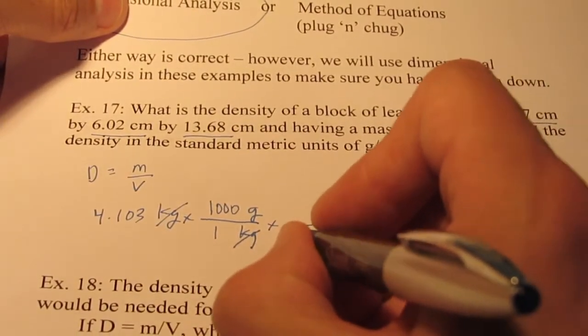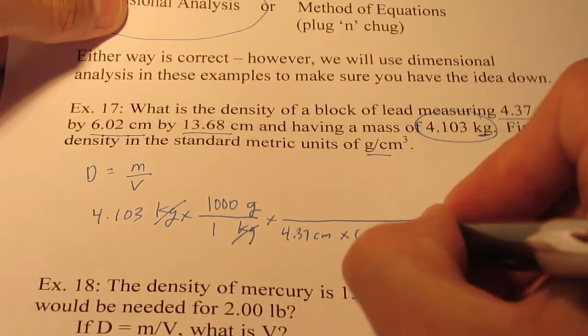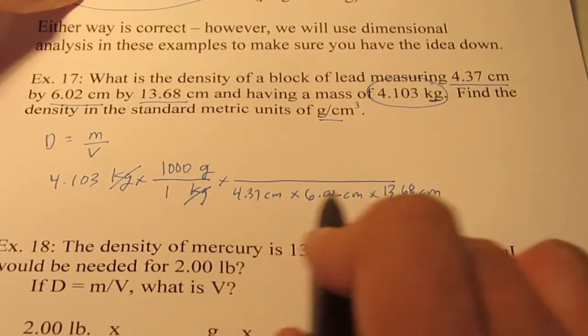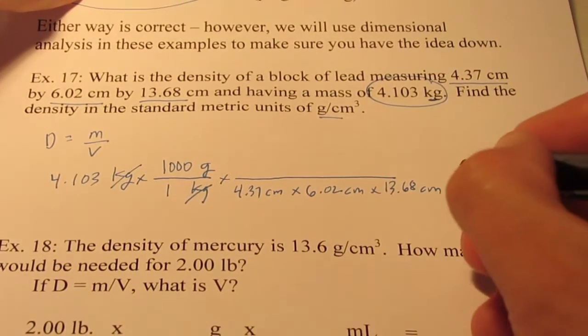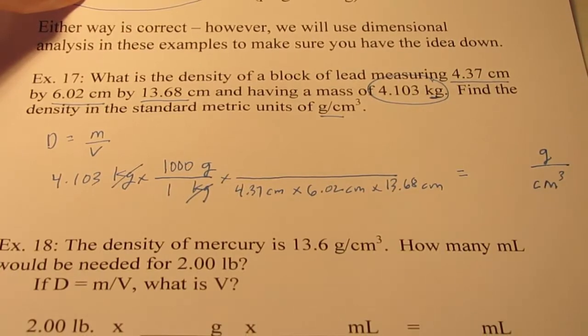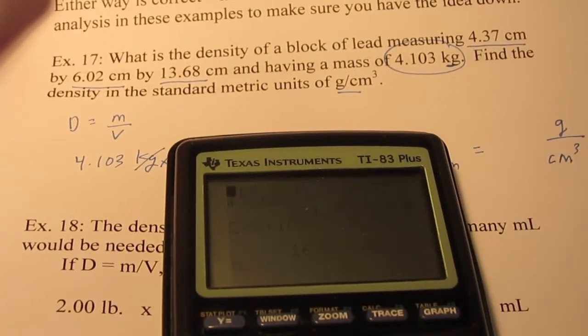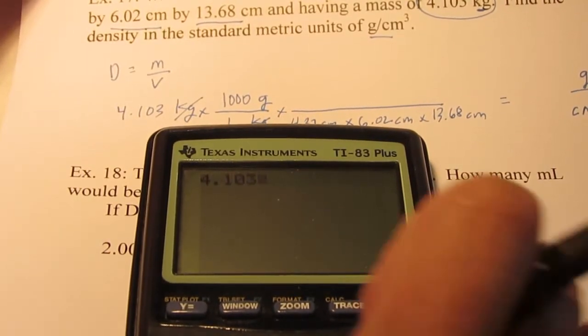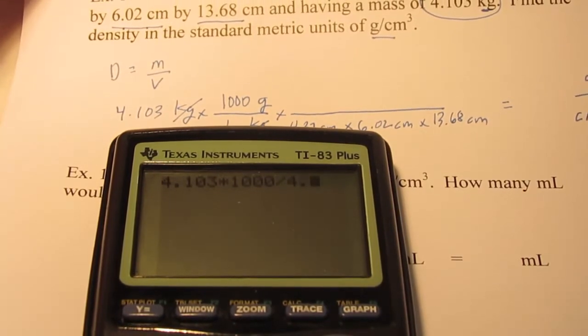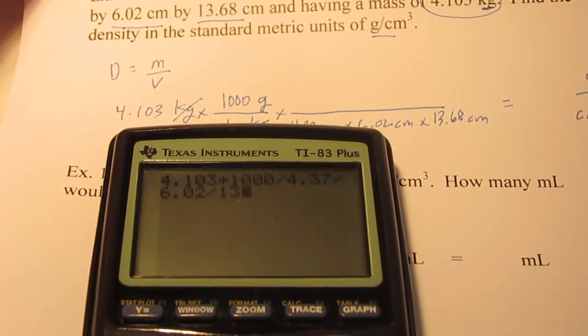I want to divide by the volume in cubic centimeters. The volume is length times width times height. So I'm going to divide by 4.37 centimeters, 6.02 centimeters, and finally 13.68 centimeters. Let's see what we get: 4.103 times 1,000 divided by 4.37 divided by 6.02 and then divided by 13.68.